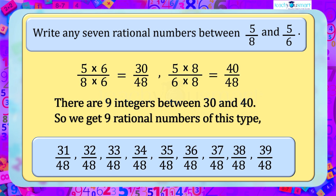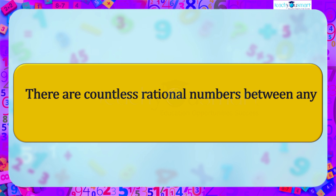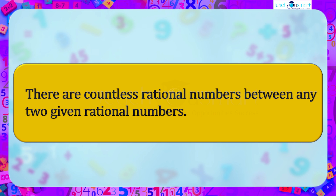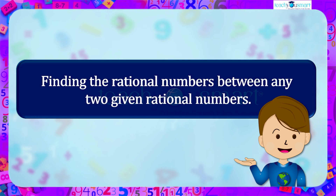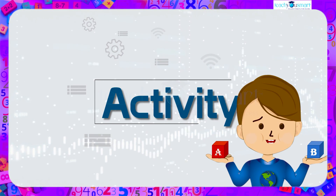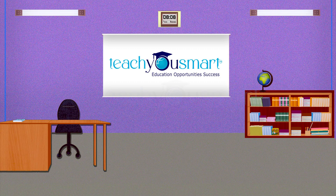We can take any 7 of these. From the above examples we can say that there are countless rational numbers between any two given rational numbers. Let's recall what we discussed today: finding the rational numbers between any two given rational numbers. Before winding up, let's check how much you understood: find any 10 rational numbers between minus 3 by 7 and minus 1 by 3. That's all for now, see you all in the next class.